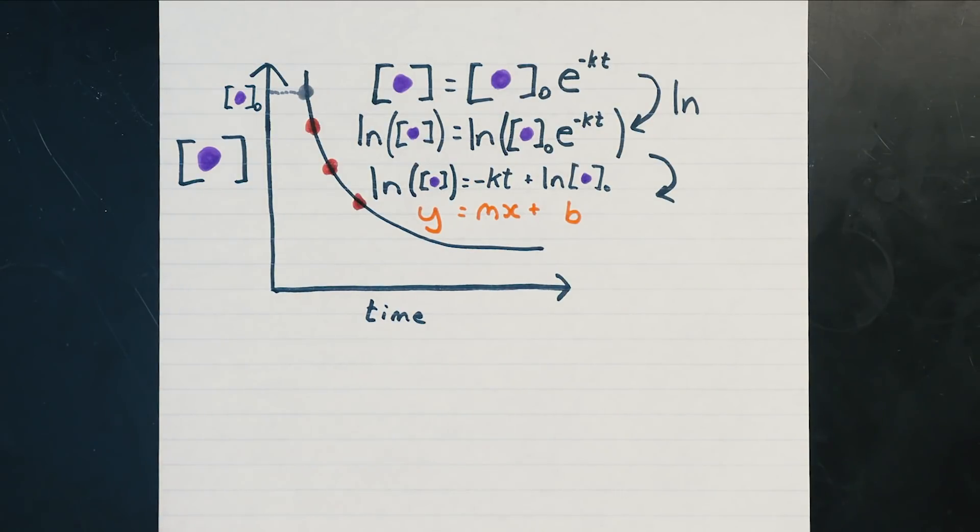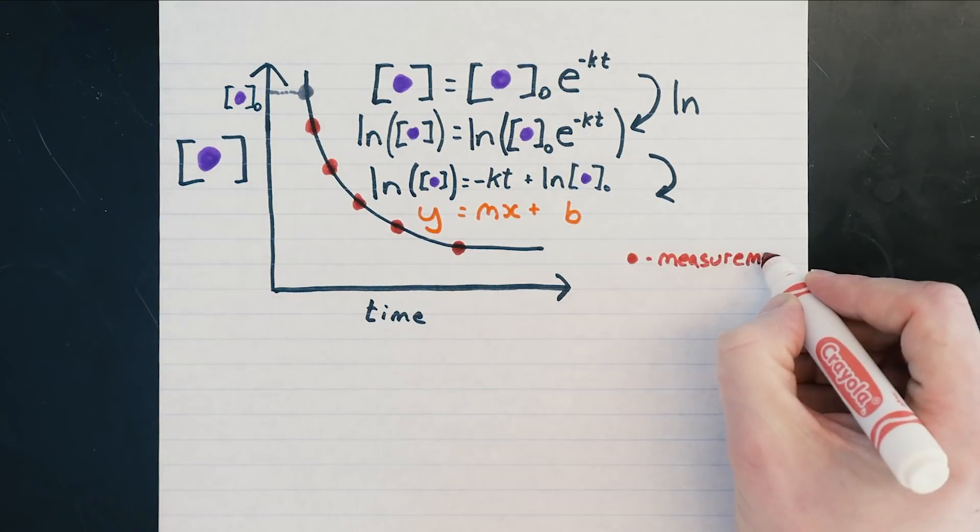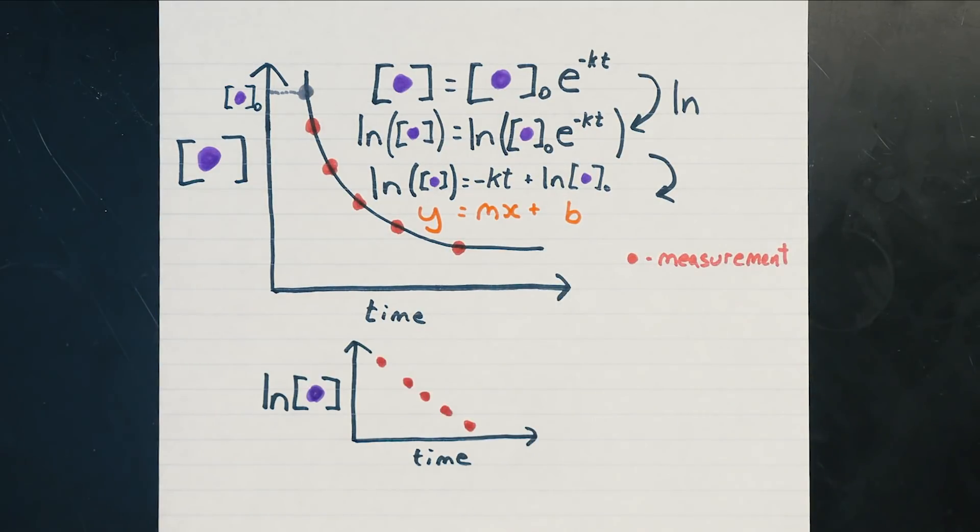So by measuring the reactant concentration at a bunch of different times, plotting the natural logarithm of concentration versus time can give us a slope which is the rate constant.